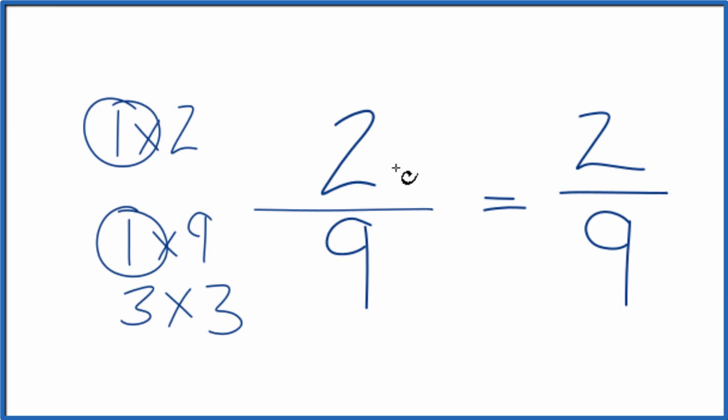What that means is that the fraction two ninths is already simplified. We can't simplify this any further.